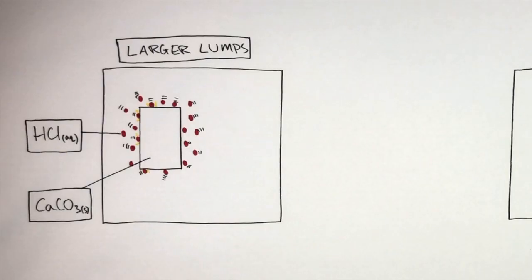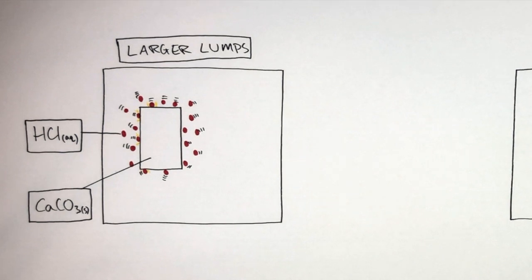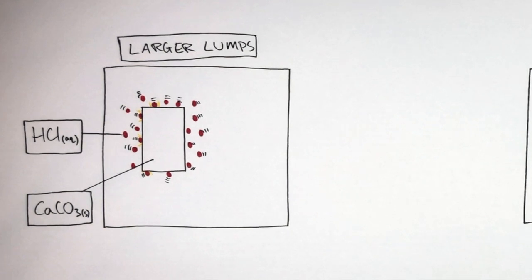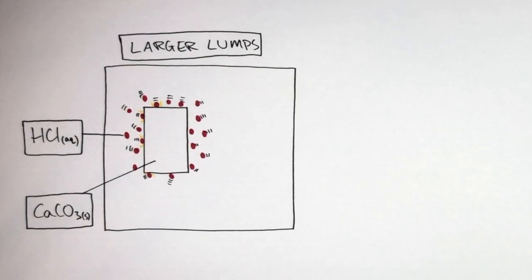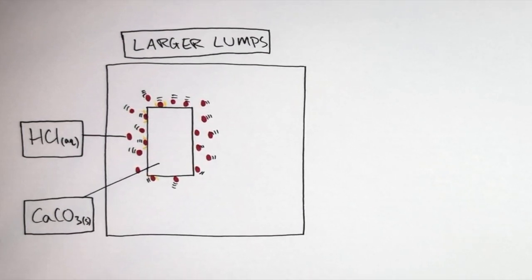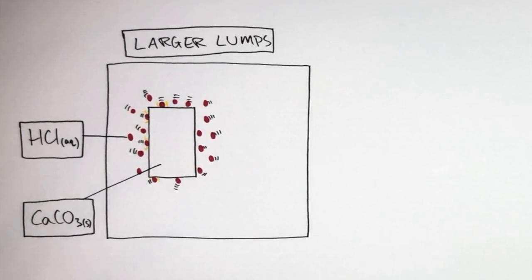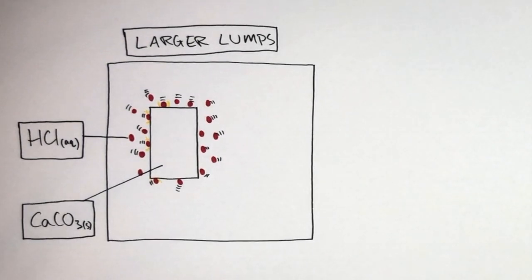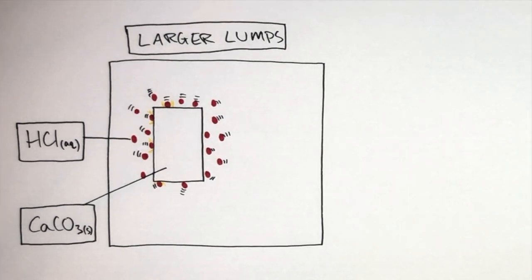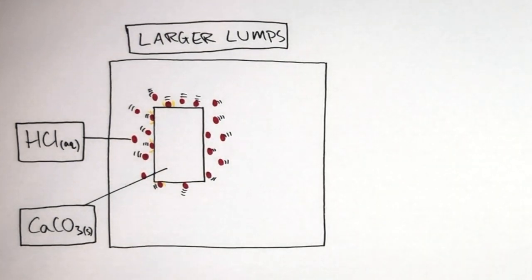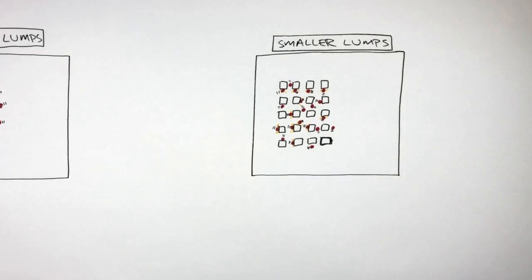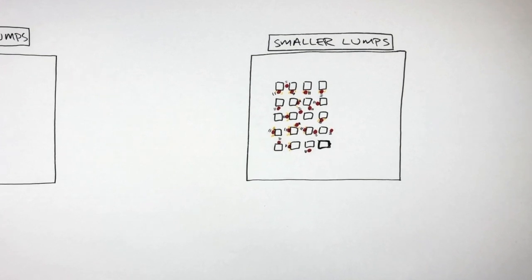If these hydrochloric acid molecules collide with the calcium carbonate compounds with enough energy, successful collisions will take place. We can see only the outer surface of the calcium carbonate chip is exposed to react with the hydrochloric acid. The calcium carbonate on the inside is not exposed, so reactions will not take place on the inside. Whereas the smaller lumps have a larger surface area, or larger surface area to volume ratio.